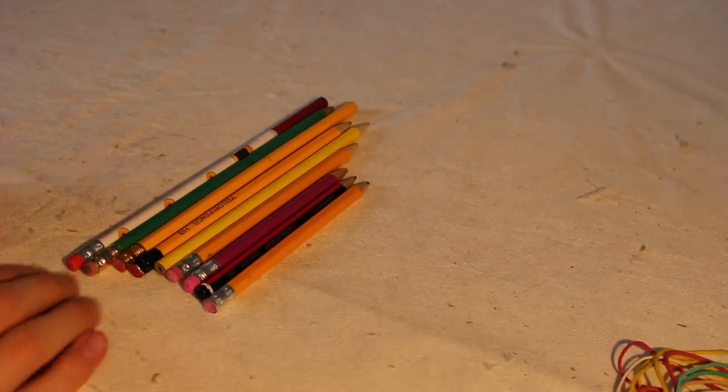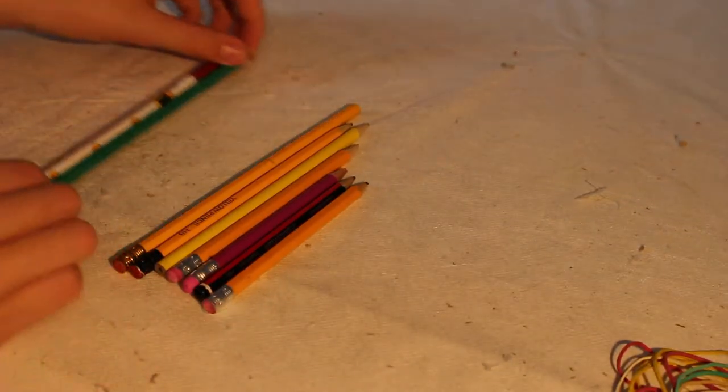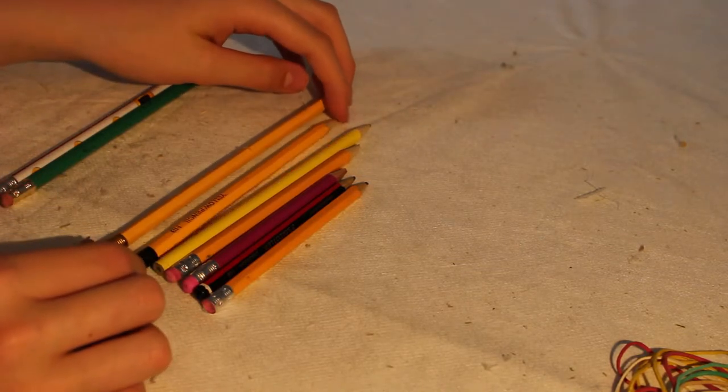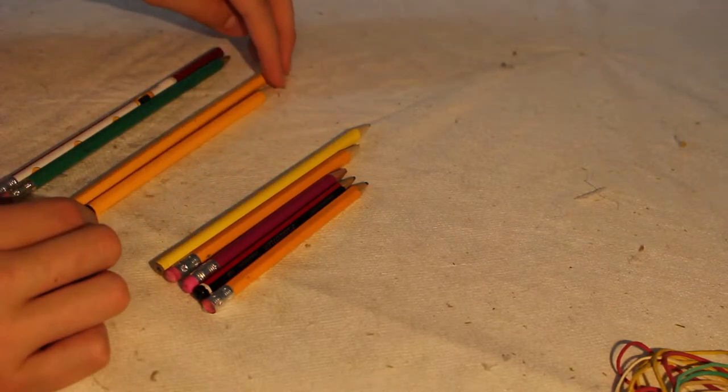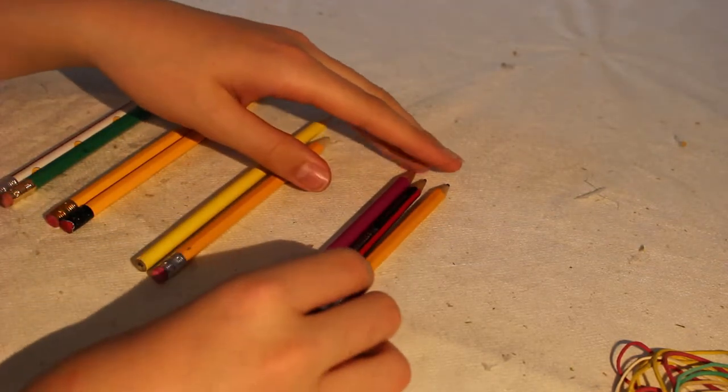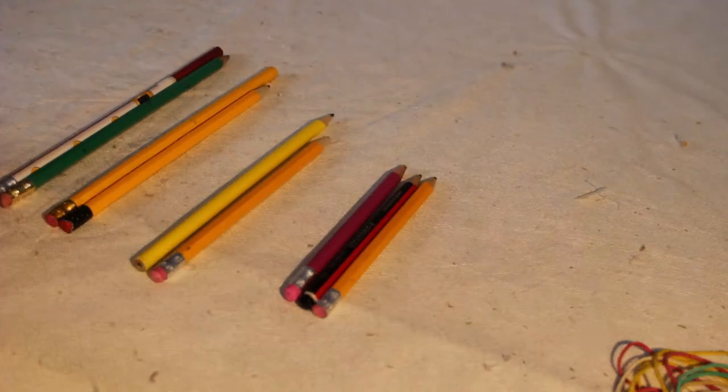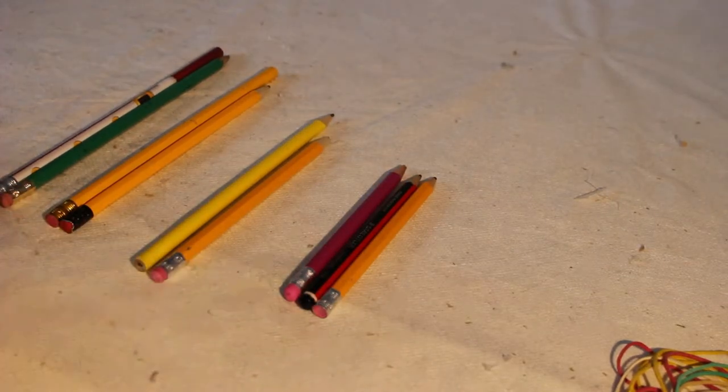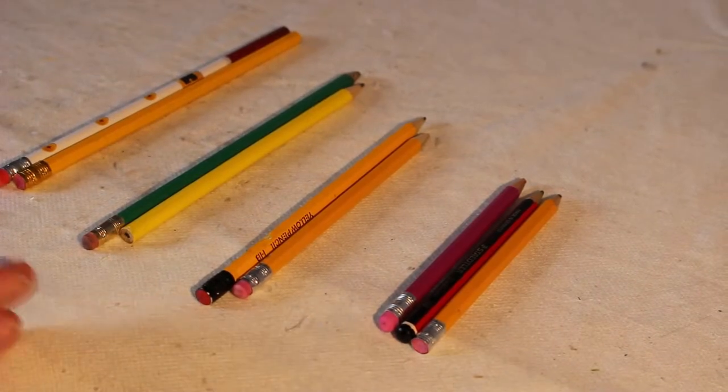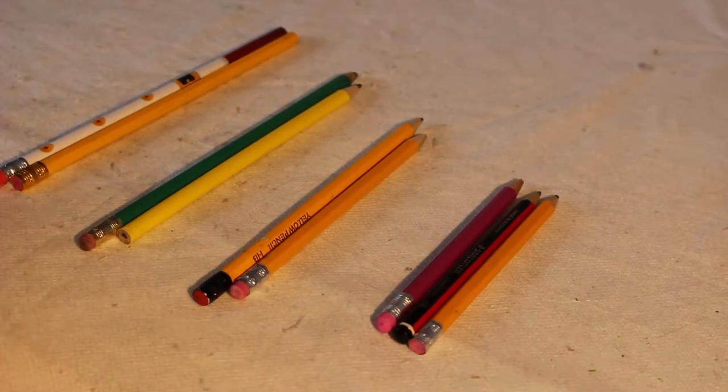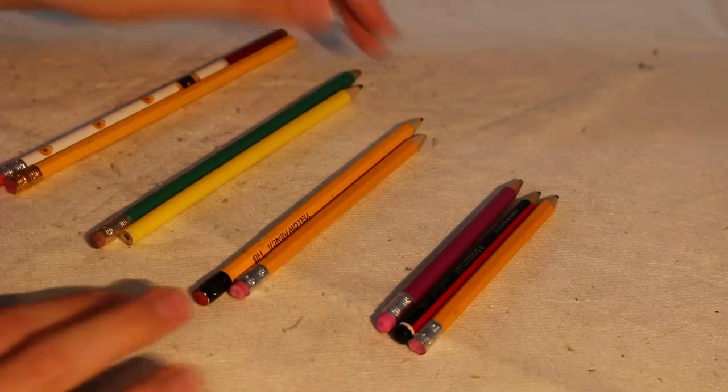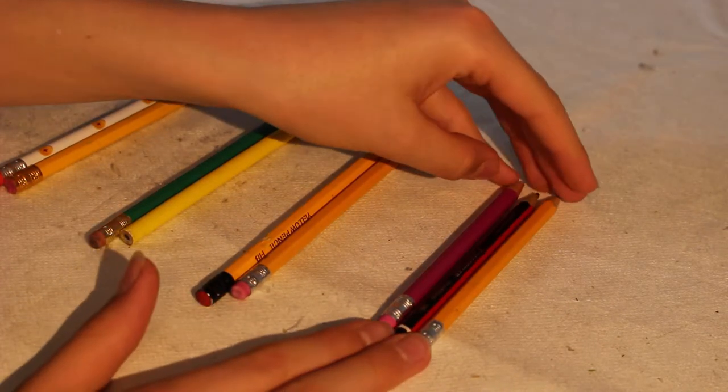Once you've got them arranged like this, you want to take the two tallest ones and then two that are a similar size and separate three that are the shortest. So you should have four piles. You want each pencil in the piles to be a similar length.